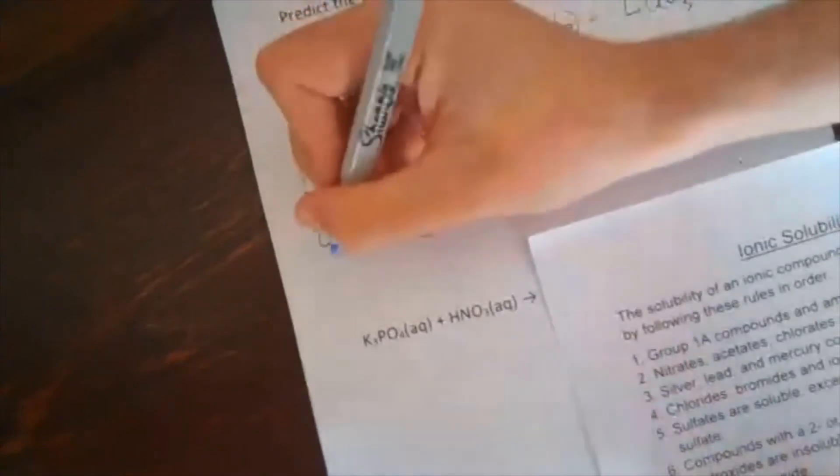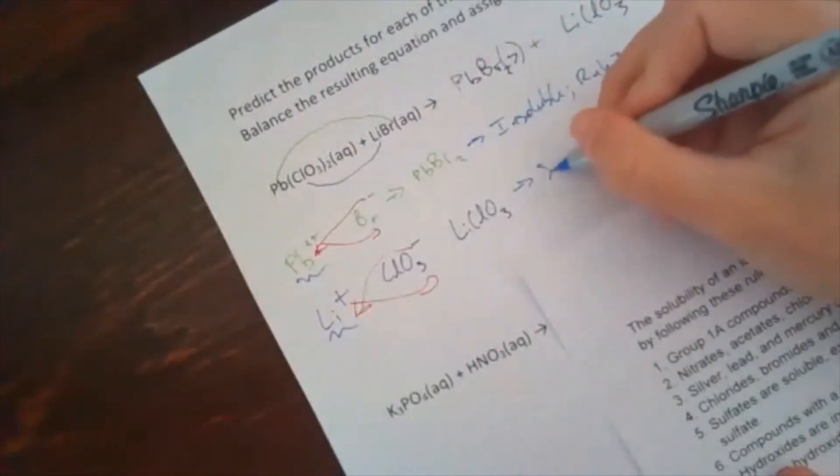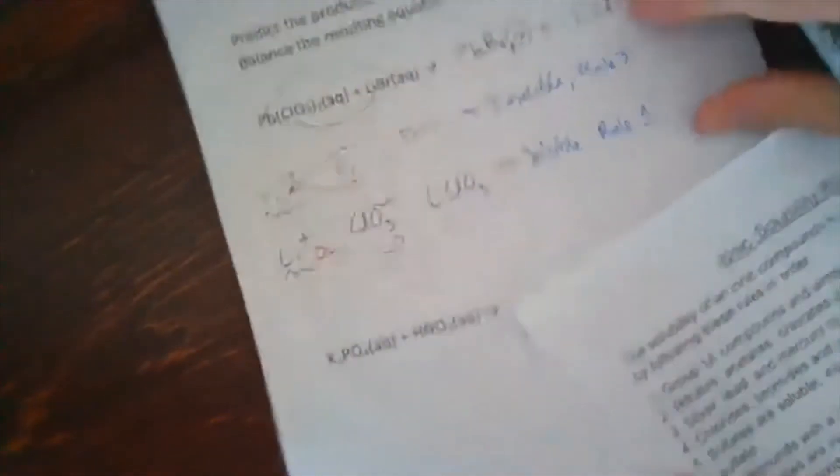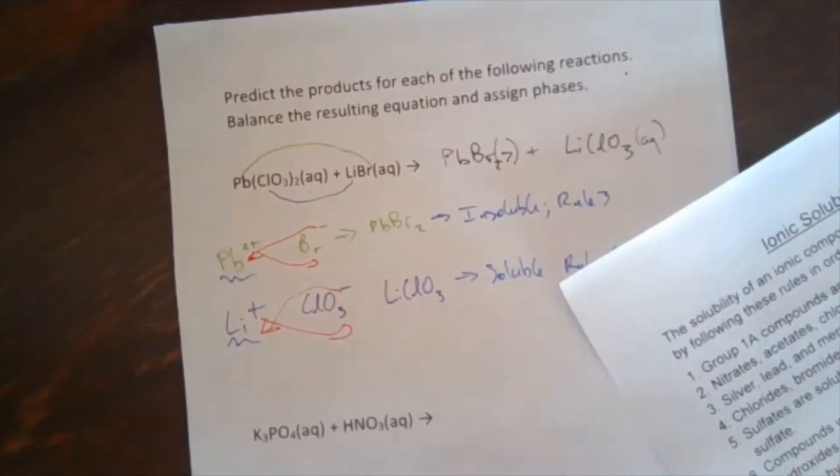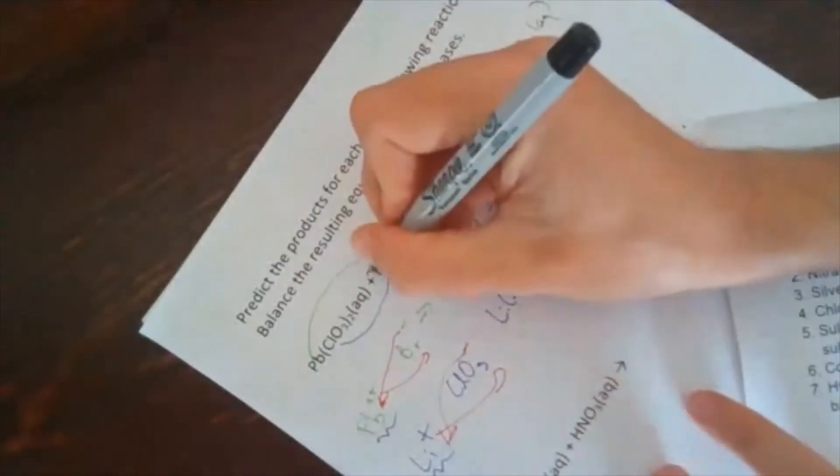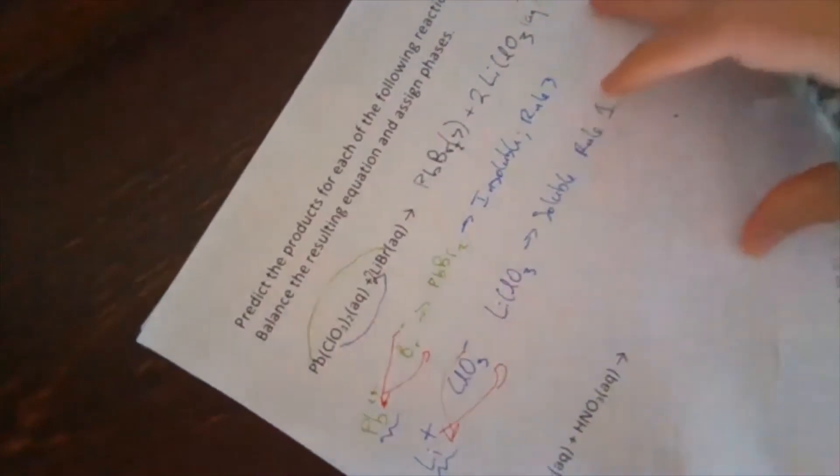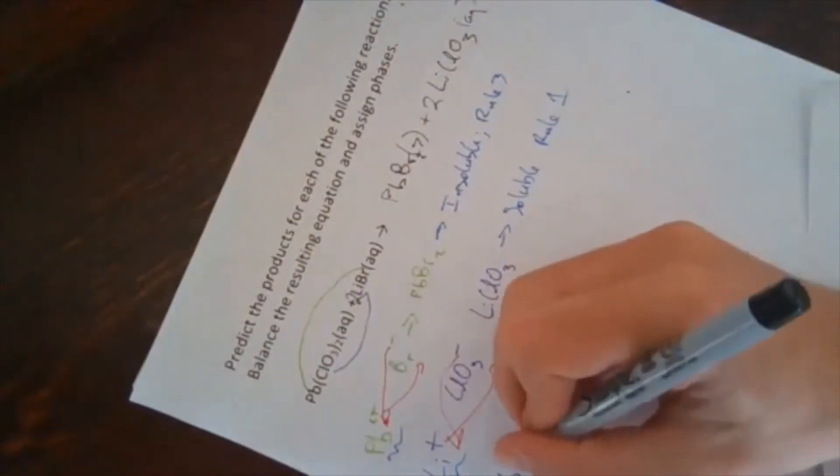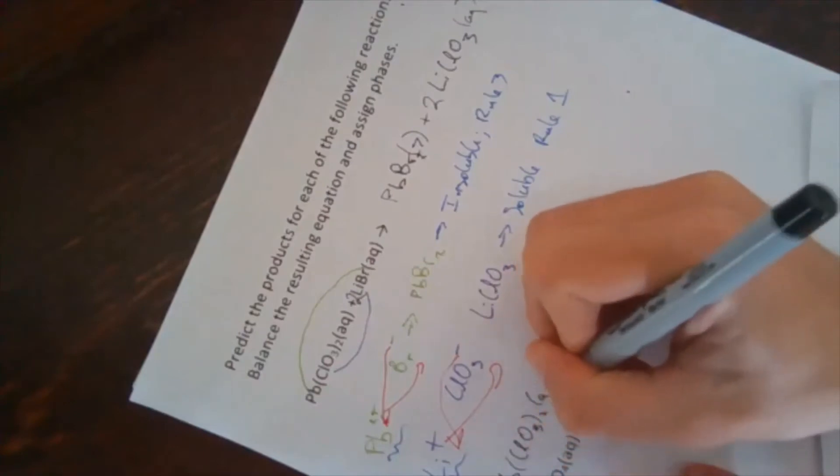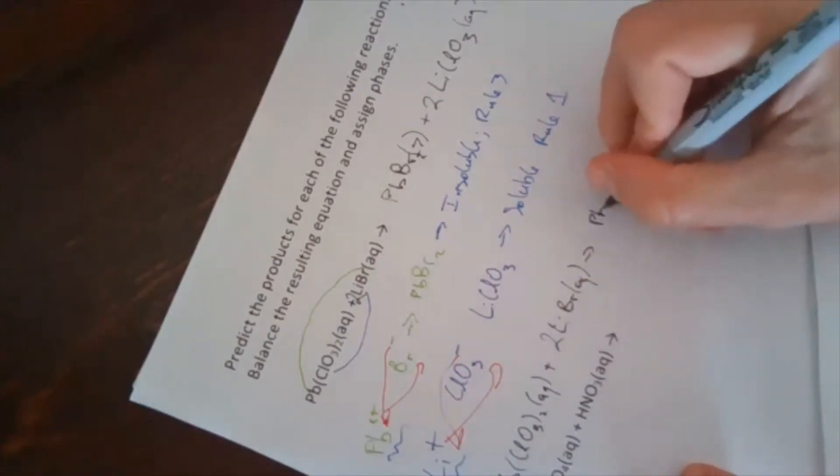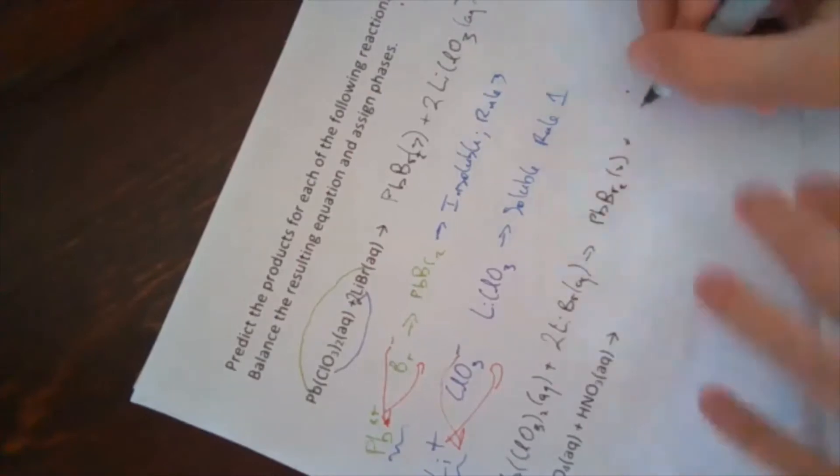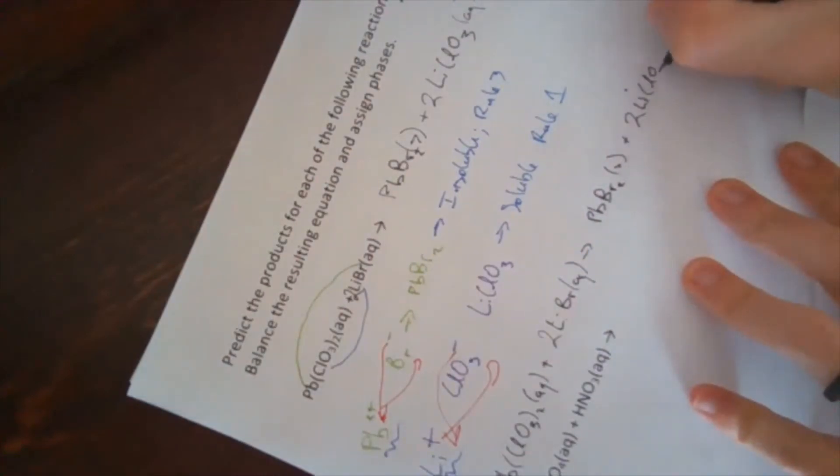Lithium chlorate is a bit easier. Rule 1. Lithium, soluble. Lithium is an alkali metal. So that is soluble. I do need to write AQ then. Final thing I need to do is balance it. I need a 2 right there, a 2 right there.